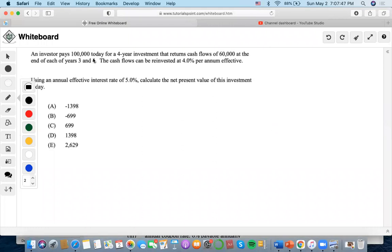Okay, so it says an investor pays $100,000 today for a four-year investment that returns cash flows of $60,000 at the end of years three and four. Right, so $60,000 in both of these scenarios.